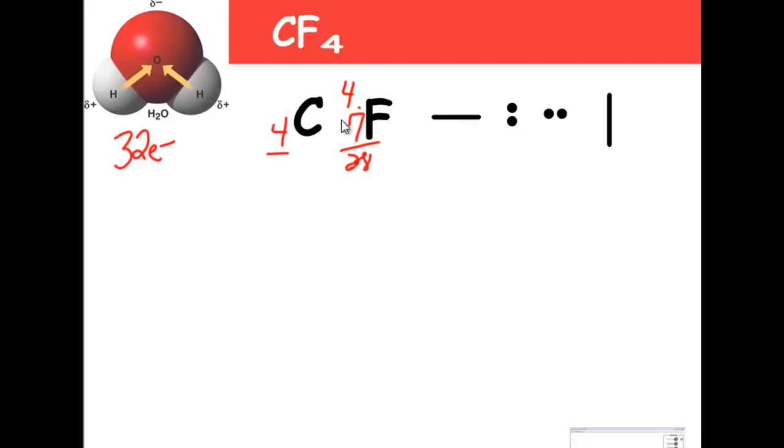Now I told you before, you should always start with carbon. Carbon should go in your center, never hydrogen. And these fluorines, these halogens, usually can only make one bond, so they're not really good center atoms. So the formula is CF4. So I put my C in the center and my four F's all around it.